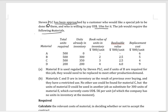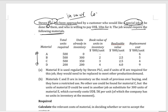A company has approached Steven PLC and they are offering $10 million for a special job. In order to carry out this special job, certain materials are required. Steven PLC has those materials available, and from this information we need to identify what cost Steven PLC is going to incur — the cost of this special job based on these details.